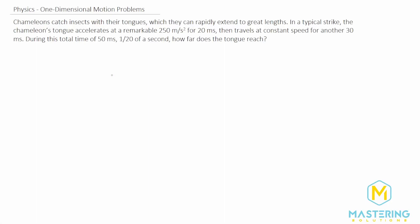Welcome to Mastering Solutions. In this problem they tell us that a chameleon can catch insects with their tongues and they extend their tongues really far. In a typical strike, the chameleon's tongue accelerates at 250 meters per second squared for 20 milliseconds, then travels at a constant speed for 30 milliseconds. In that time of 1/20th of a second, how far does the tongue reach?